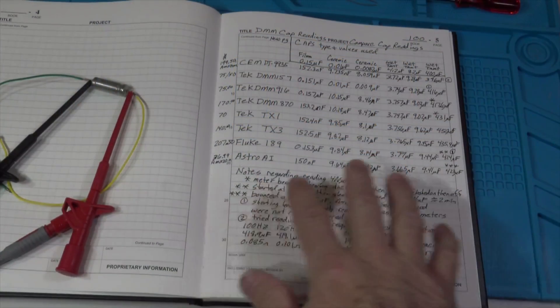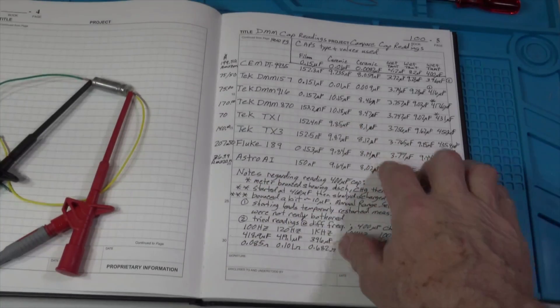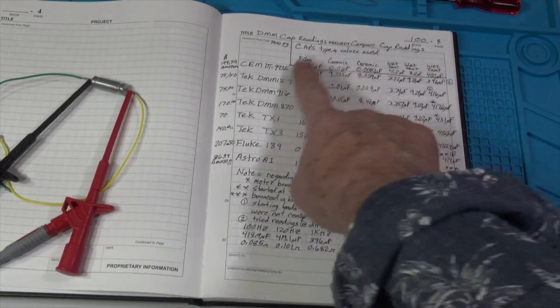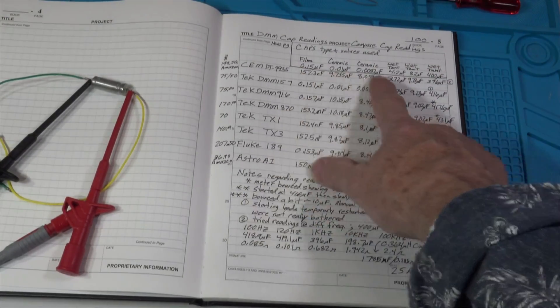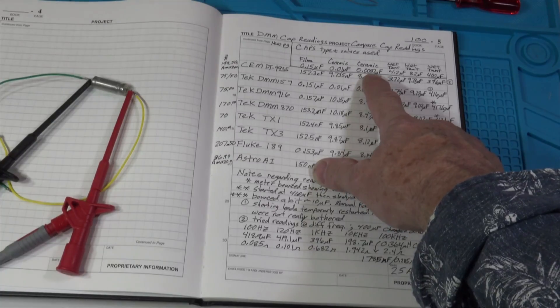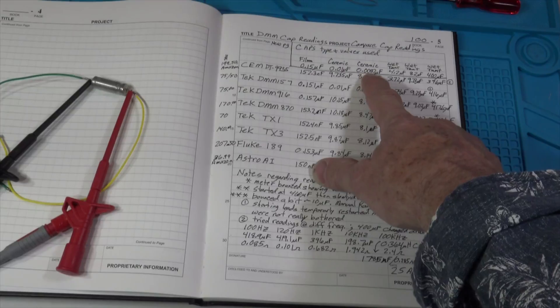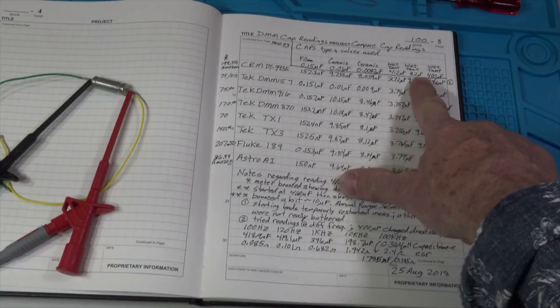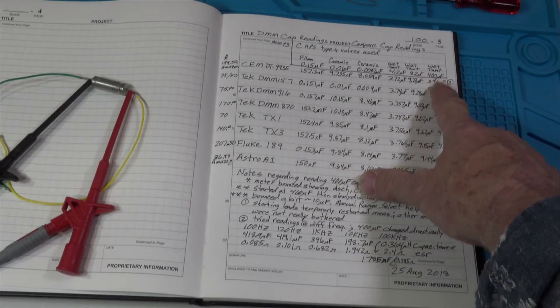All right, so I hope you can read this. This is the notes on the results. Essentially what I have here are the types of caps across here: the film 0.15 microfarad, the ceramic 0.01 microfarad, another ceramic, it was an 8.2 nanofarad or 0.0082 microfarad, and then a couple wet tantalums, a 4.2 microfarad, and an 8.2 microfarad, and a 400 microfarad wet tantalum.